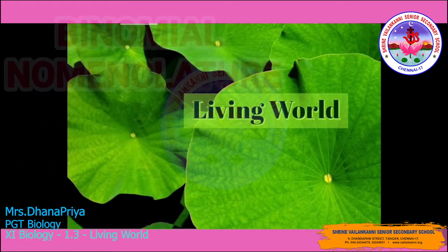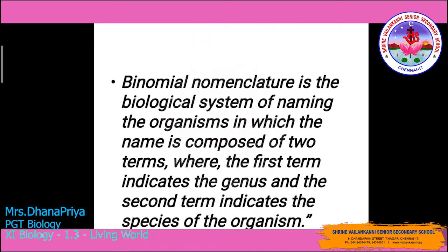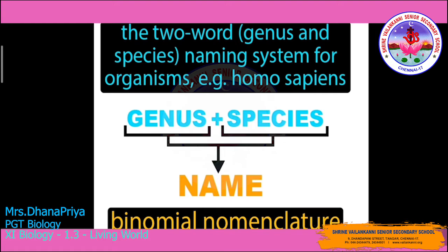Today we are going to deal with binomial nomenclature. Binomial nomenclature is the formal naming system for living things that all scientists use. It gives every species a two-part scientific name — it is the biological system of naming organisms in which the name is composed of two terms: the first term indicates the genus and the second term indicates the species of the organism.